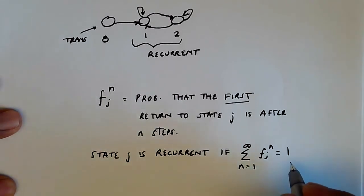On the other hand, if this is not equal to 1, if there's a non-zero probability that we never come back, then we'll call this transient.